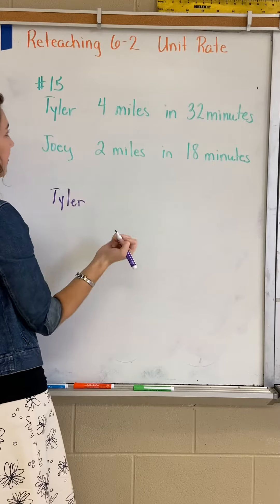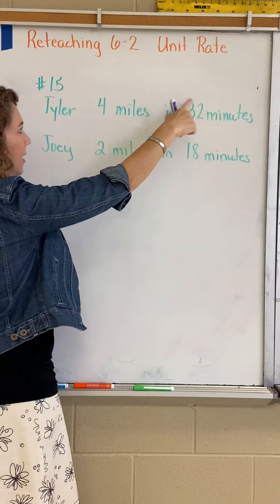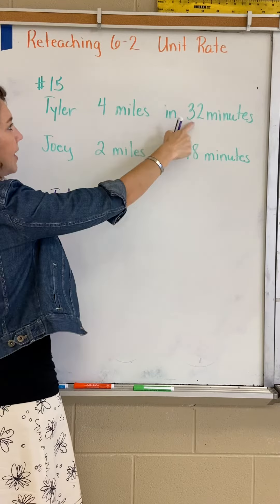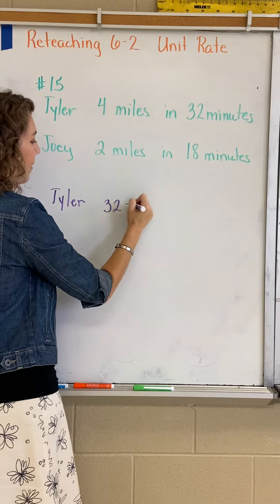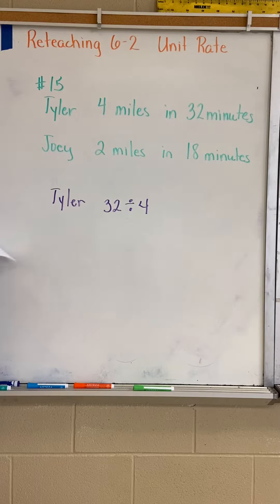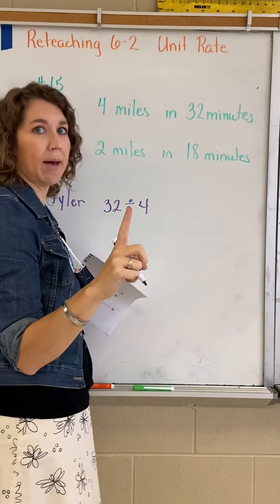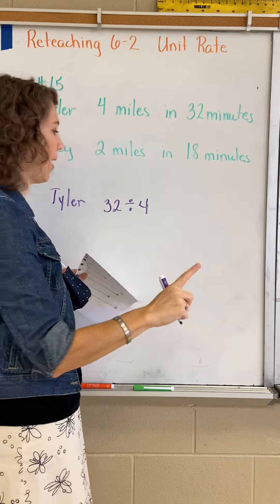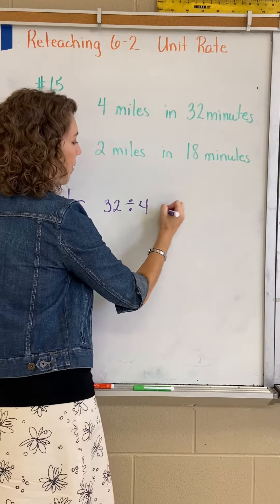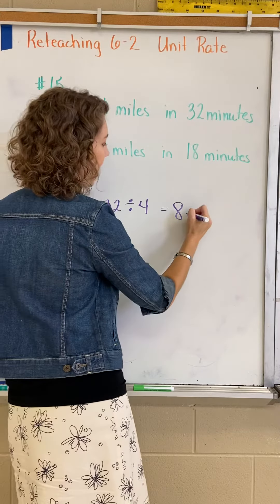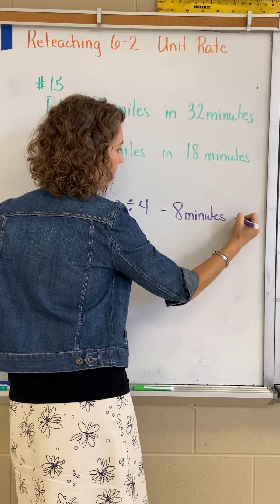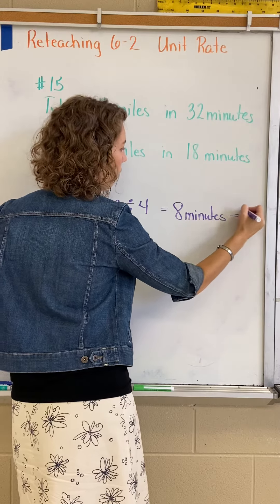I'm gonna use division this time. I'm gonna say how many minutes he jogged — 32 — and I'm gonna divide that by four, because I want to know how many minutes it takes him to jog one mile. So I'm gonna take the minutes and divide by the miles, and that would equal eight. In eight minutes, he can go one mile.